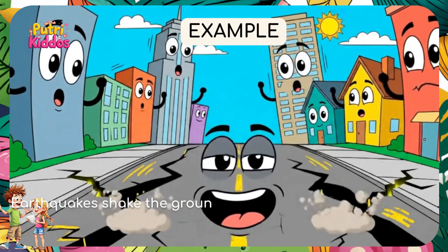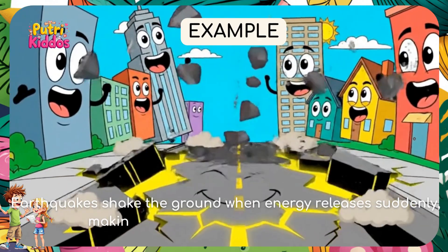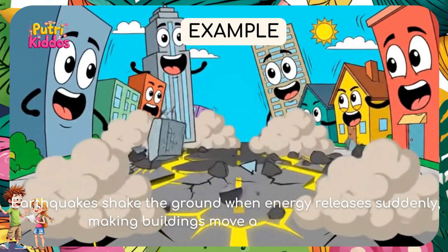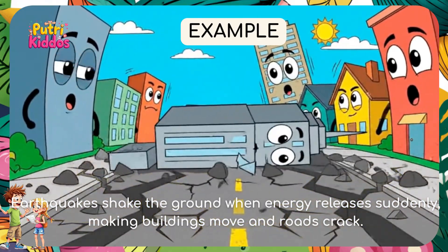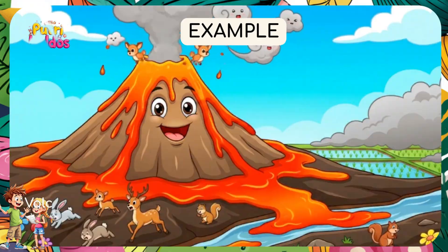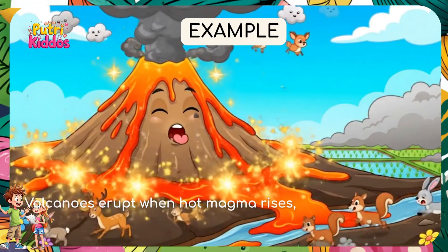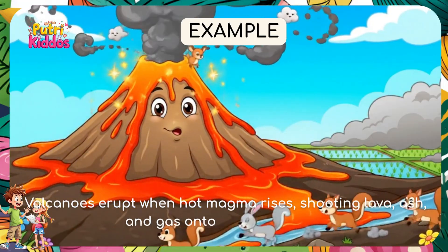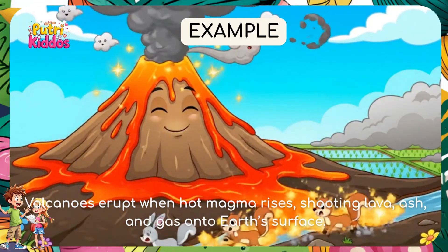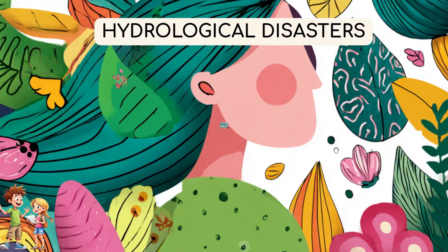Example 1: Earthquakes shake the ground when energy releases suddenly, making buildings move and roads crack. Example 2: Volcanoes erupt when hot magma rises, shooting lava, ash and gas on the Earth's surface.